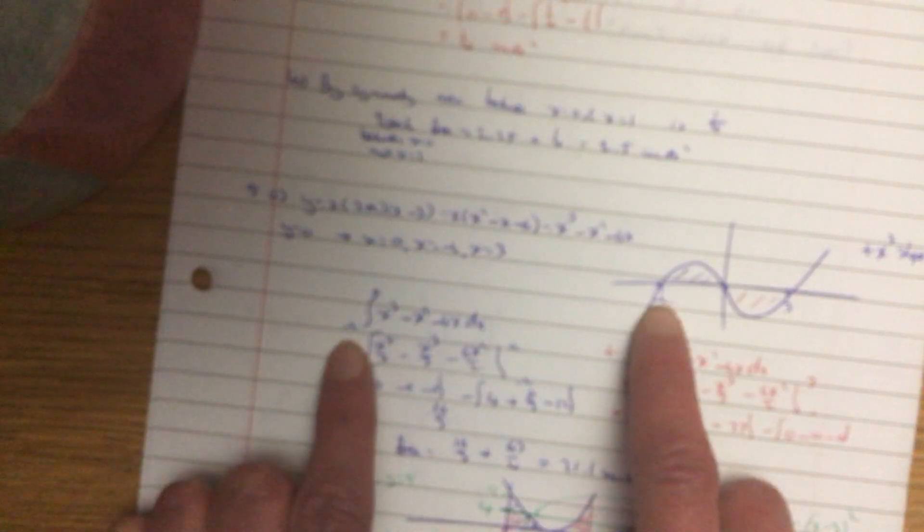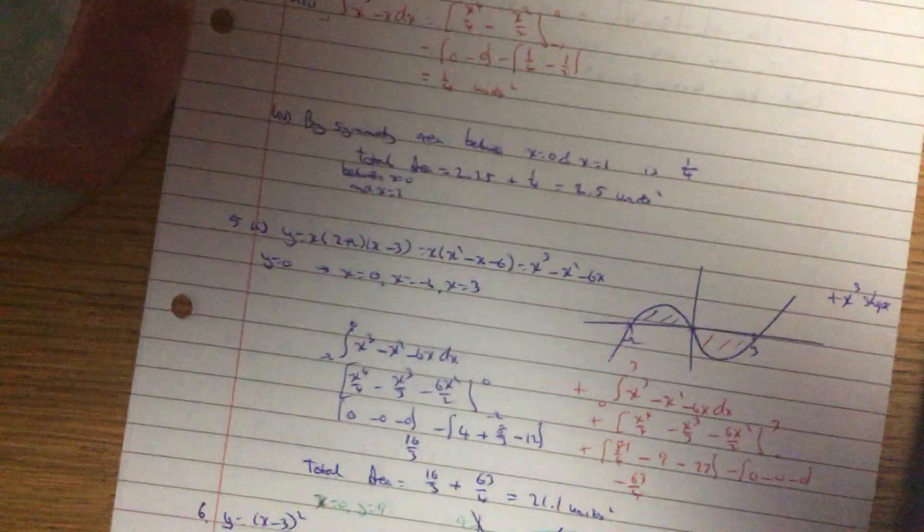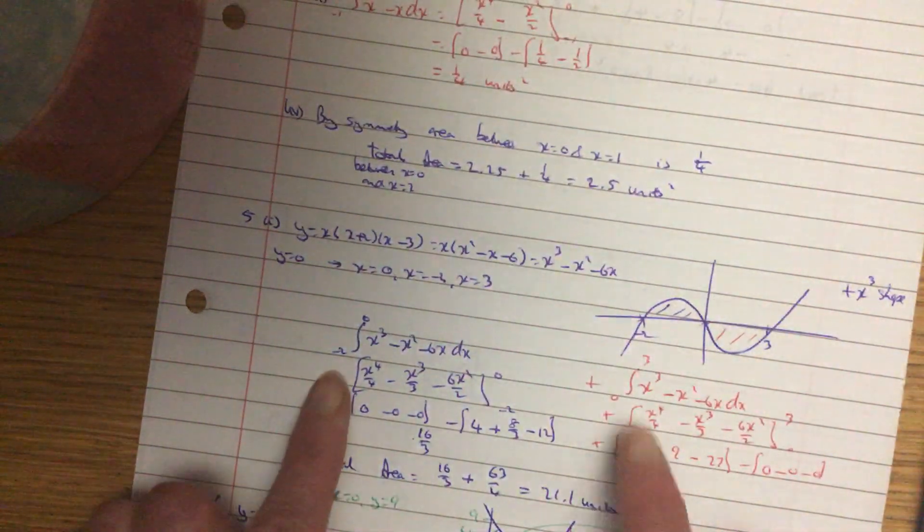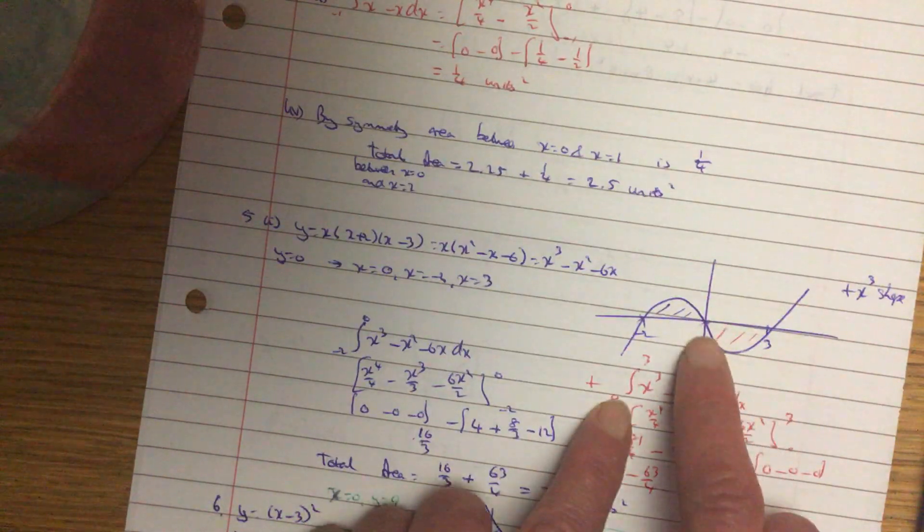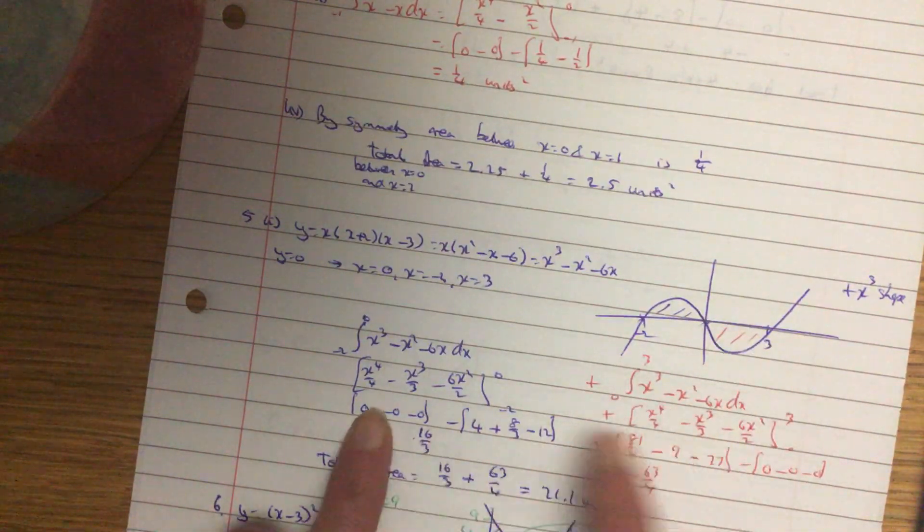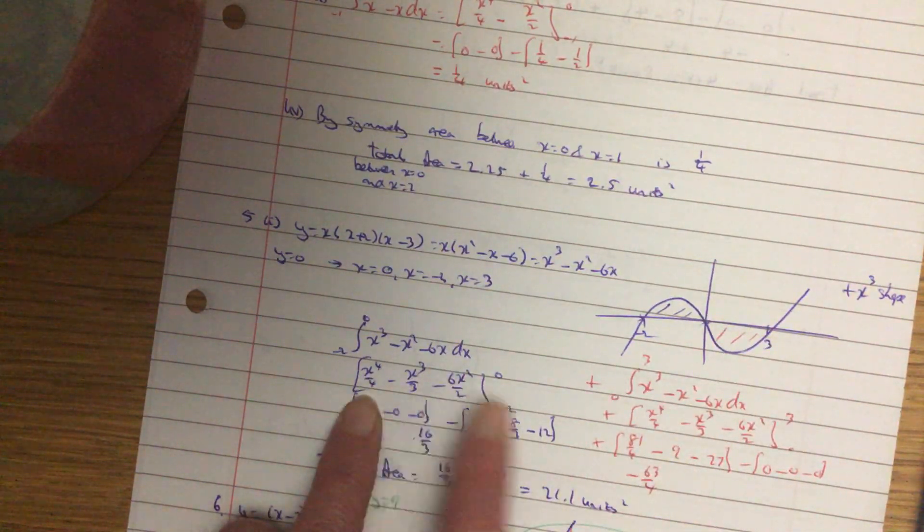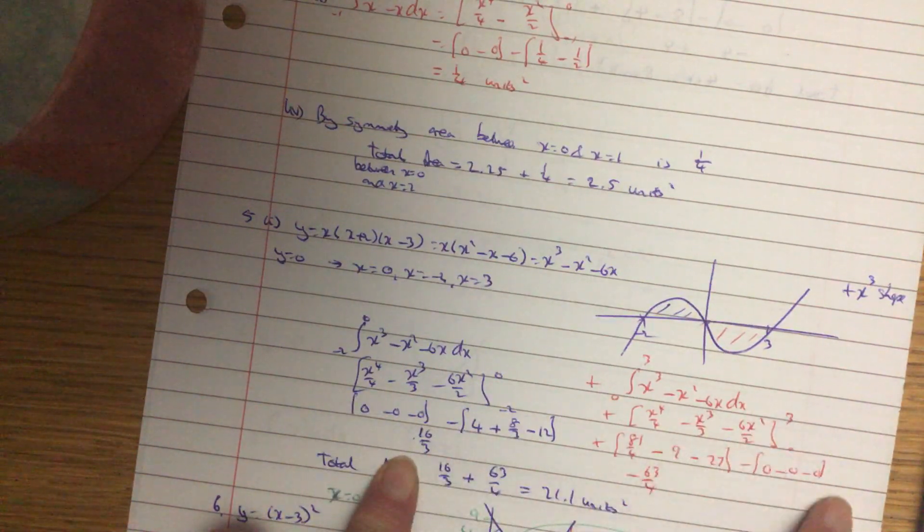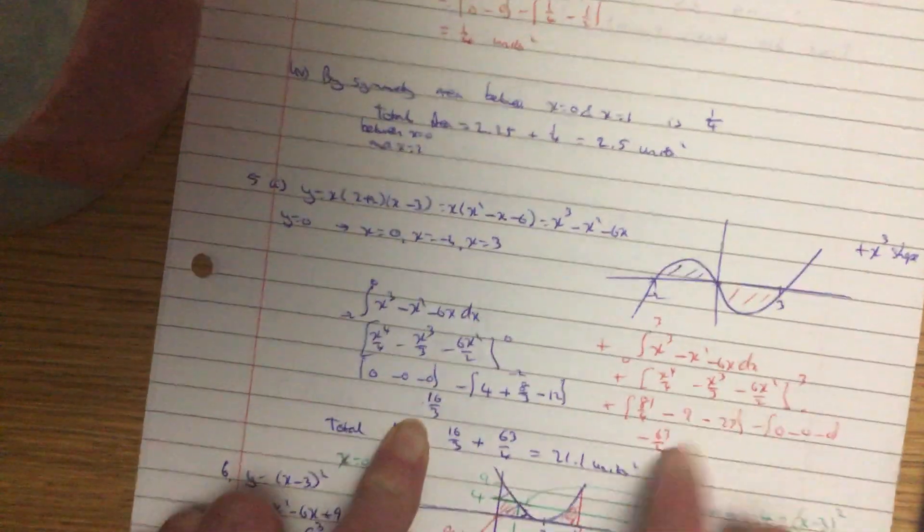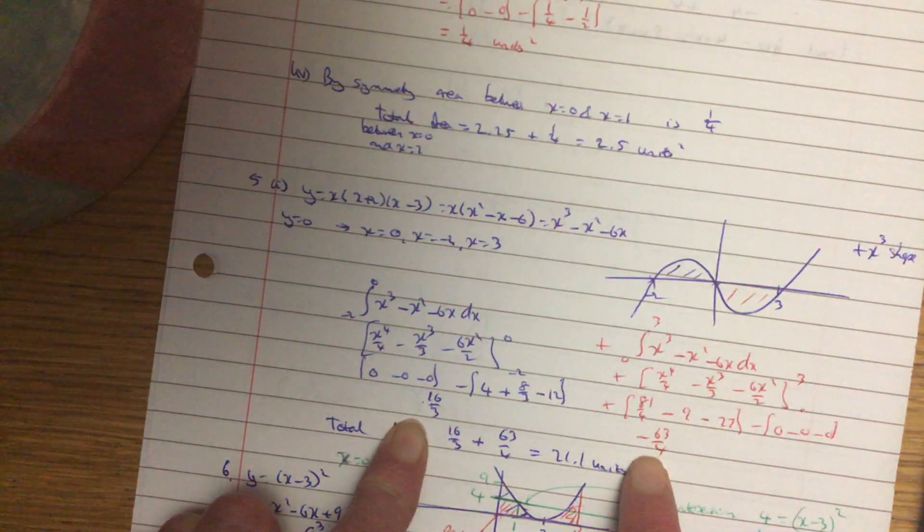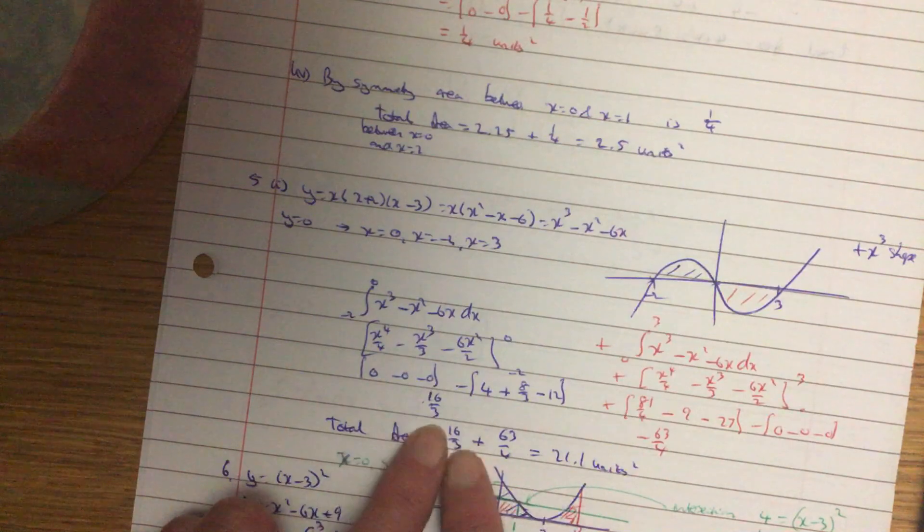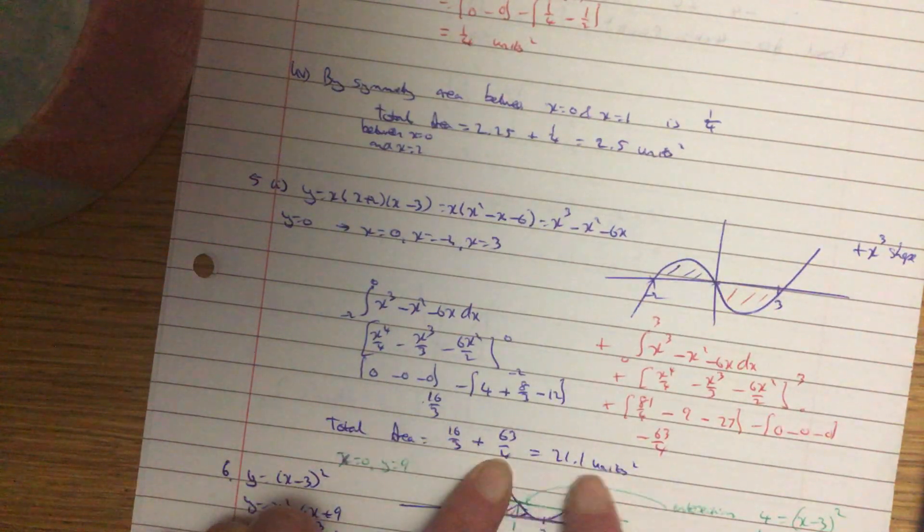So the first one's between minus 2 and 0 for the blue area. And the next one's between 0 and 3 for the red area. Just standard. Integrate. Sub in the upper value. Sub in the lower. Subtract. Sub in the upper. Sub in the lower. Subtract. Remember that's in the negative bit of the y-axis. So give that as a positive when you're adding it up. 16 over 3 plus 63 over 4.